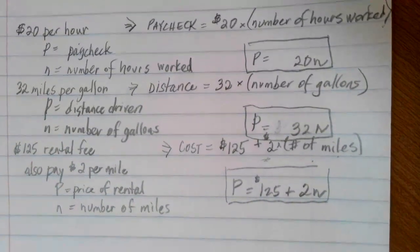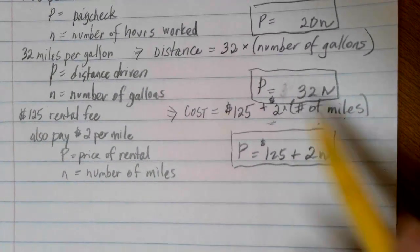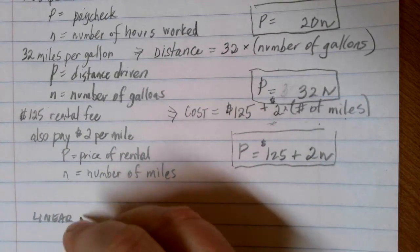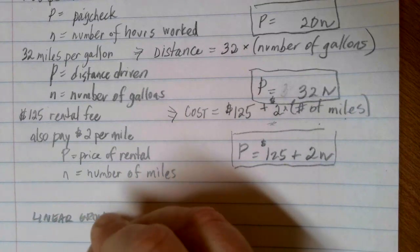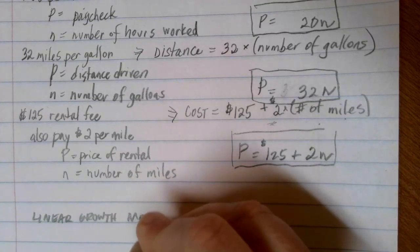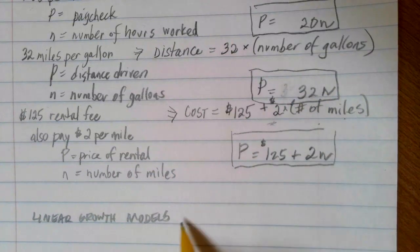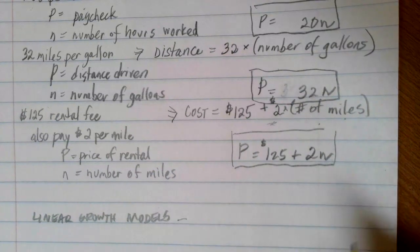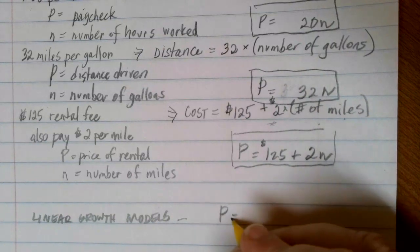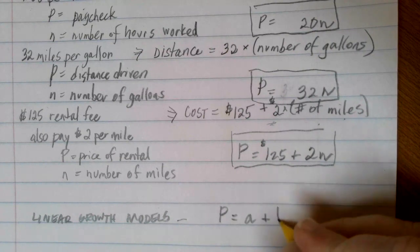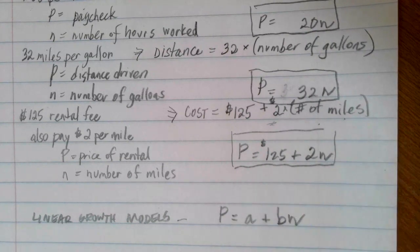Now, all of these equations can be our examples of linear growth models. And because of the way that our rate of change is a constant numbered growth, our general formula that we use for any linear growth model is going to look like this: P is equal to A plus B times N.